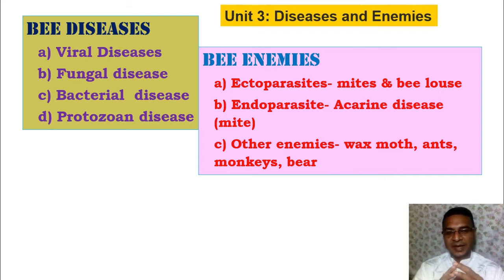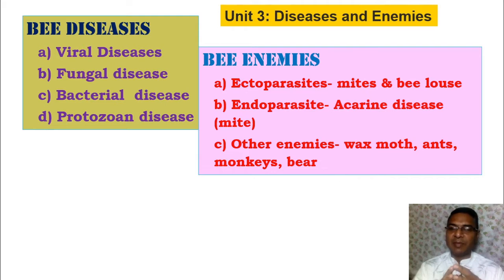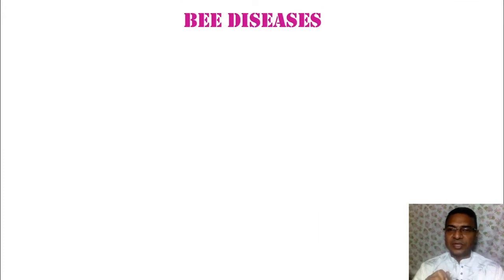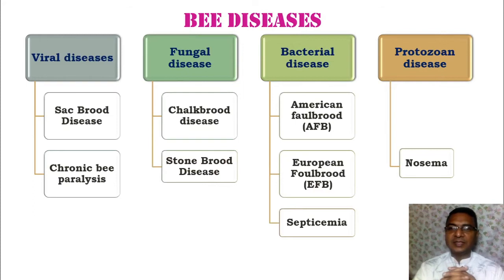Among the enemies, there are ectoparasites in the form of mites and beetles, and endoparasites in the form of the Acarine disease caused by a mite. Other enemies include wax moth, ants, monkeys, bears, and reptiles, which also decline colony productivity. We will focus on bee diseases: viral diseases include sac brood disease and chronic bee paralysis.